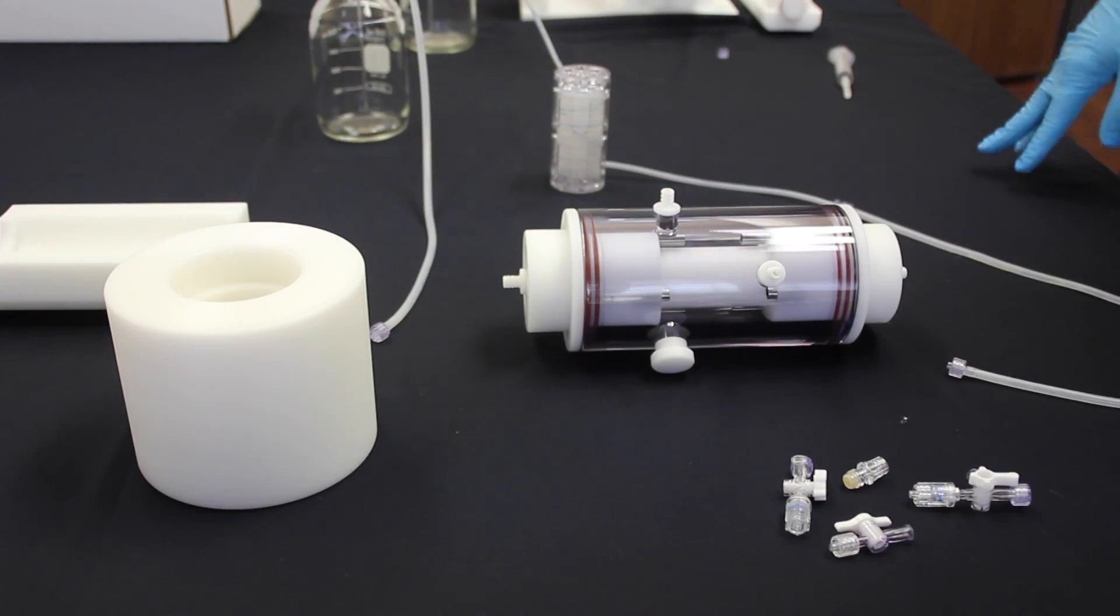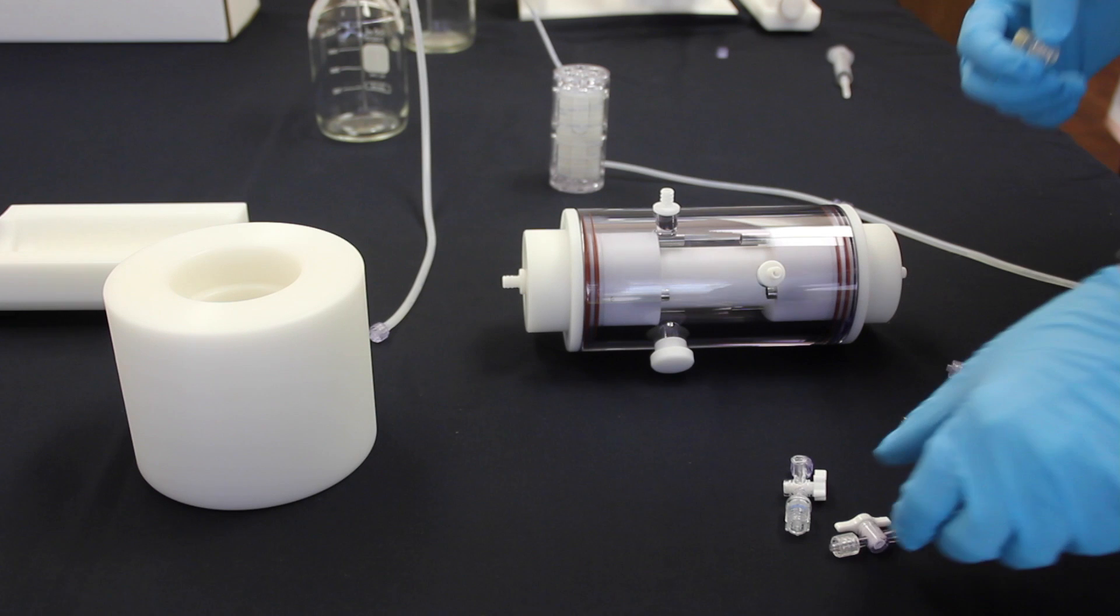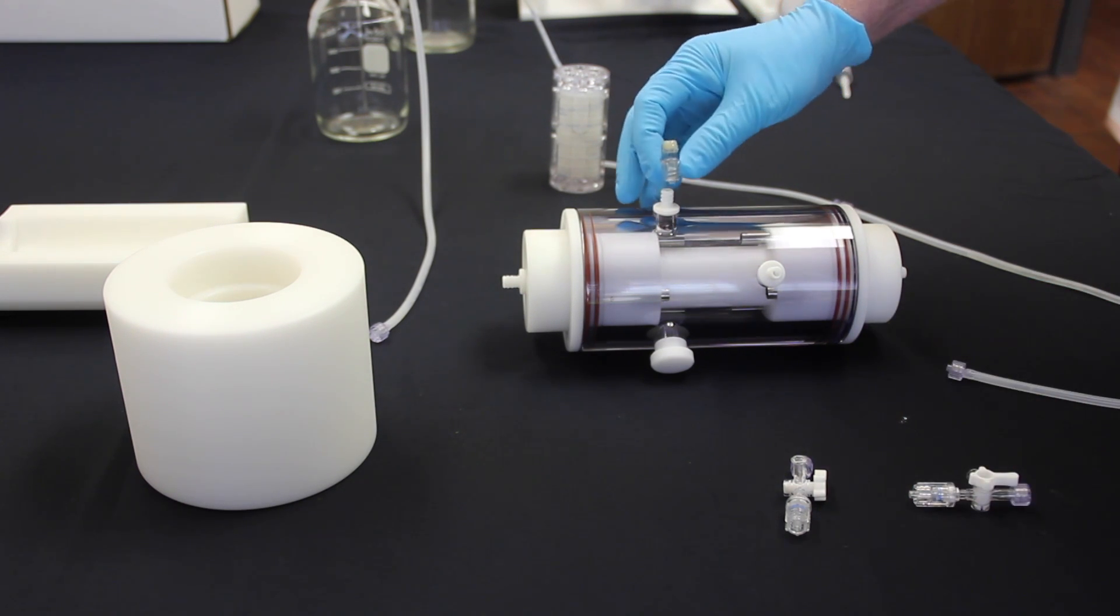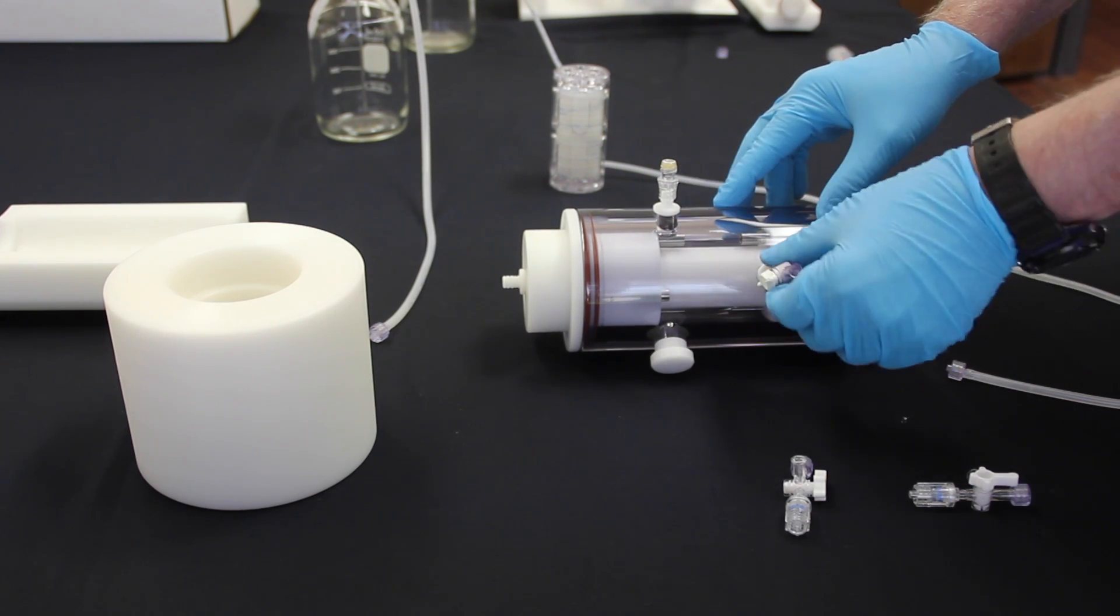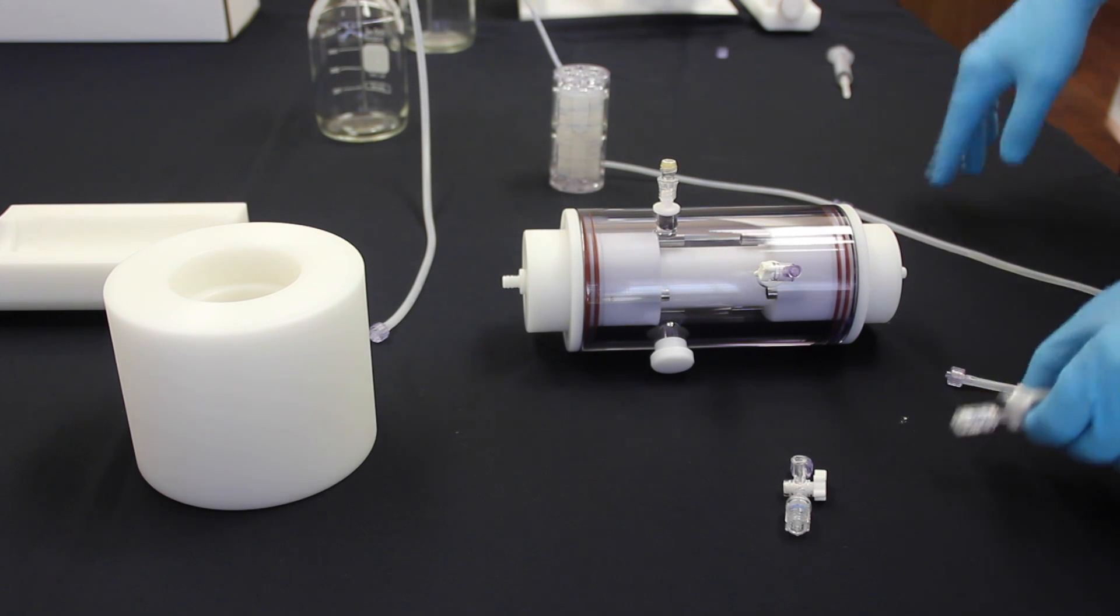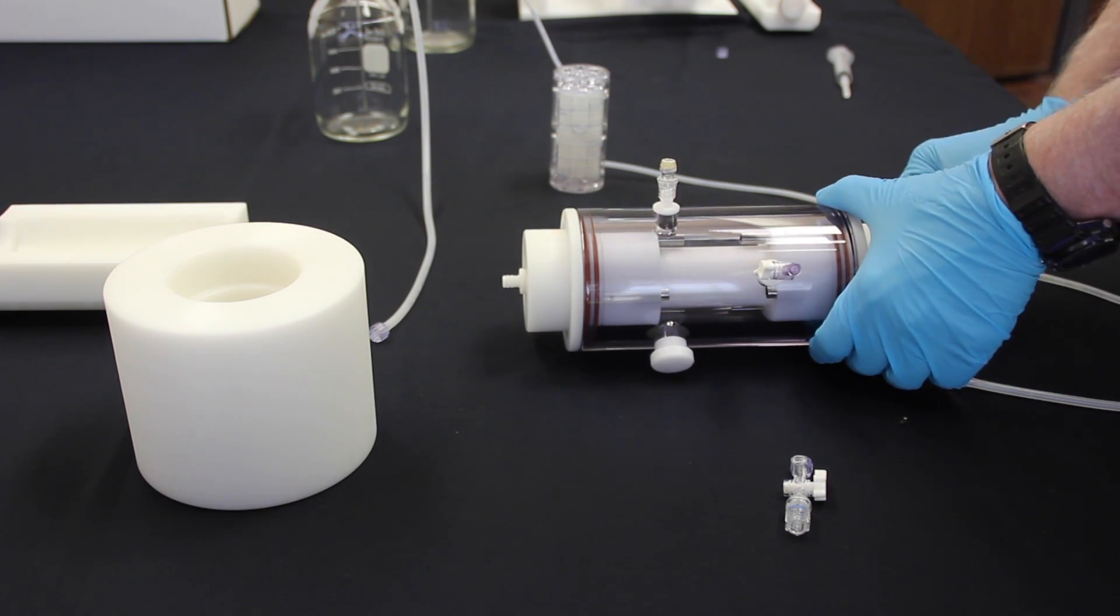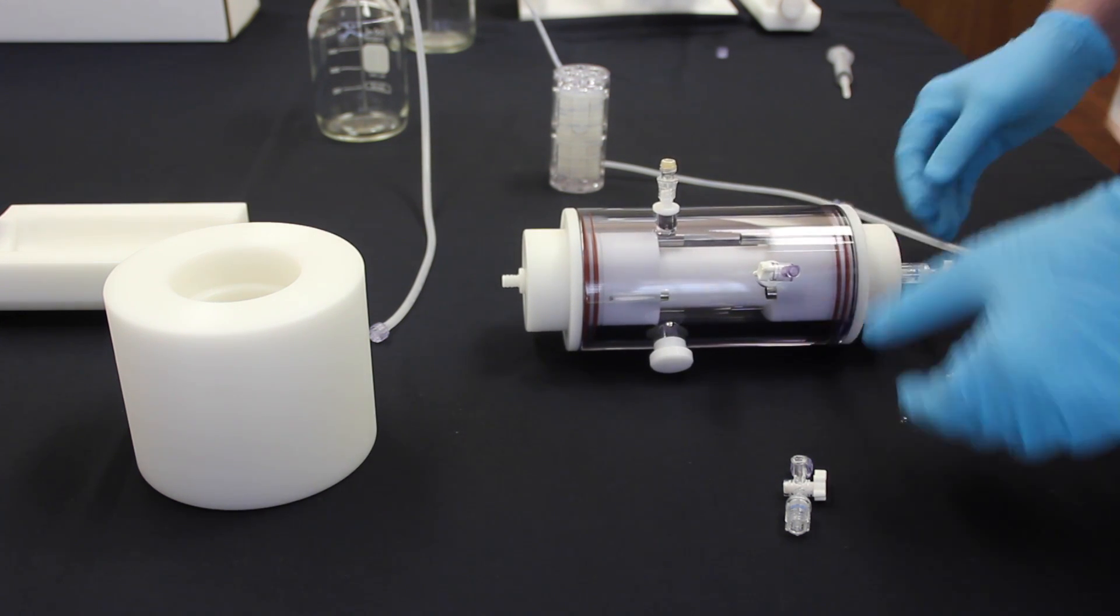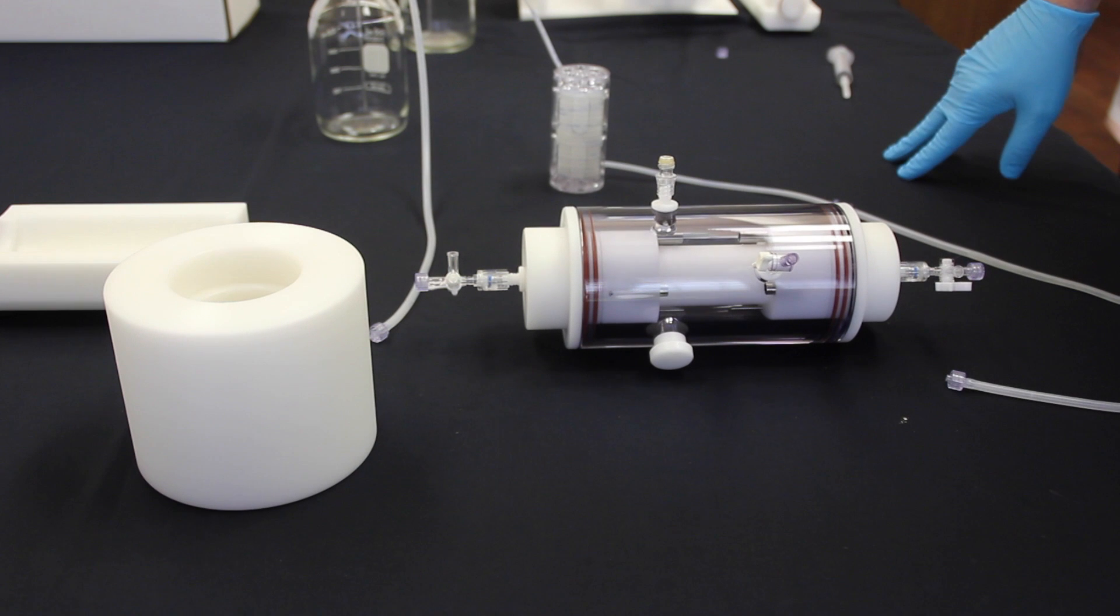So now that we have the vessel mostly assembled, you will need to remove the one-way valves or septums, whichever you choose to use, from their sterile packaging. Each of these will be attached to the ports one at a time before filling with media. Then on the sides, on the end caps, you will attach the other sterile one-way valves, keeping in mind which side is the inflow and the outflow.